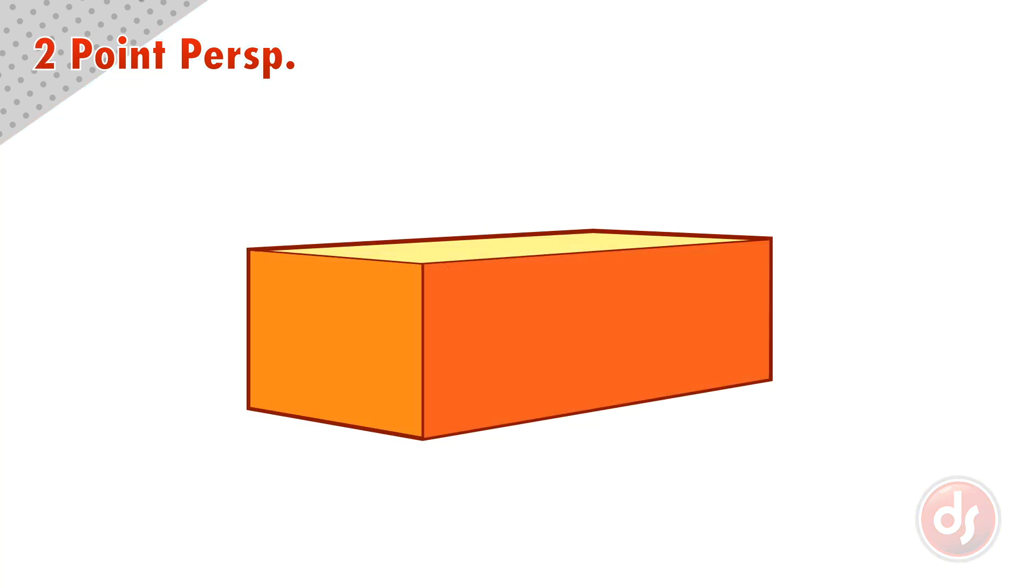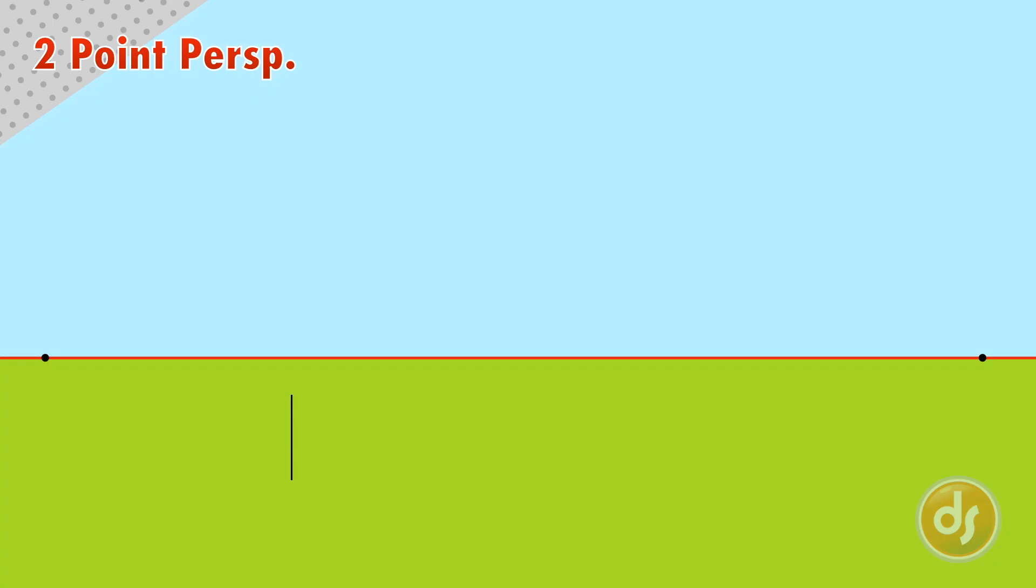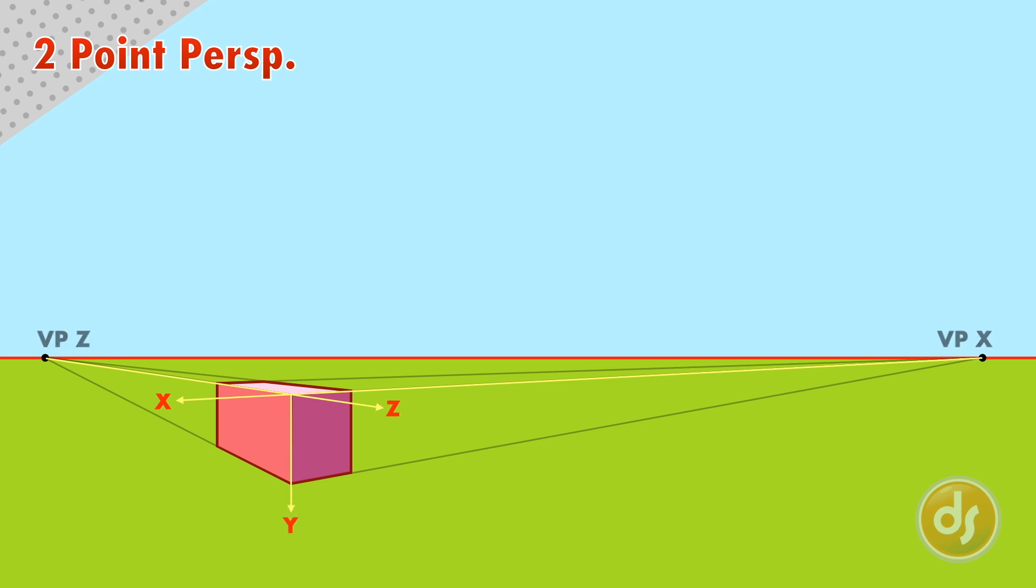An object appears in two point perspective when the viewer is looking at the edge of it. We start with a single vertical line that represents the edge of the object, and then draw lines from the top and bottom towards two vanishing points on the horizon line. Draw two more vertical lines to define the end of the box, and then take those corners to the vanishing points. Now you have a box in two point perspective. In two point perspective, the X and Z line systems vanish to a point, and the Y lines remain perpendicular to the horizon line. We could even label the vanishing points, the Z vanishing point and the X vanishing point.